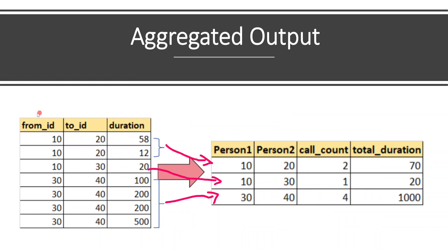As mentioned, when we have produced this intermediate output, a simple aggregate function is going to produce the expected output. I hope you understood the problem statement, how we have to start thinking, and what different solutions we have in SQL. Now let's get started with the demo.